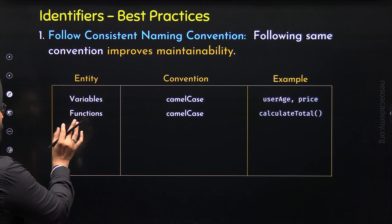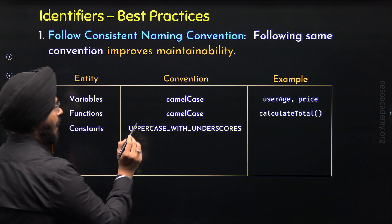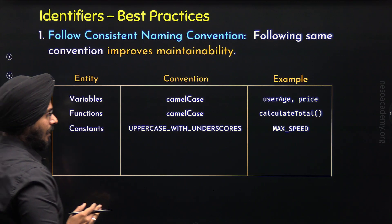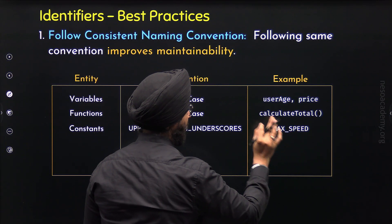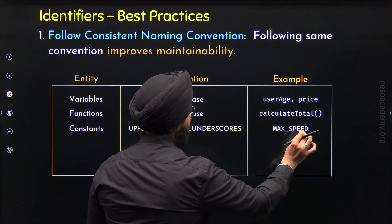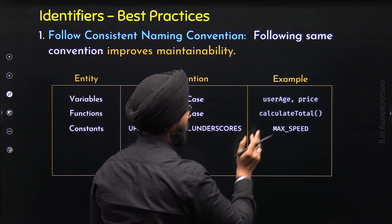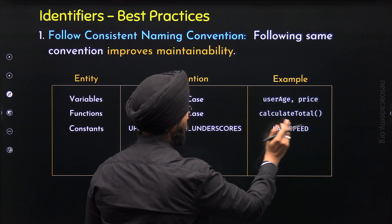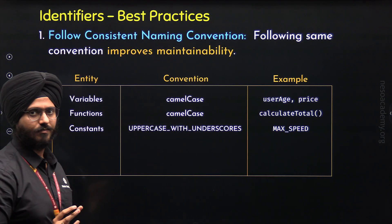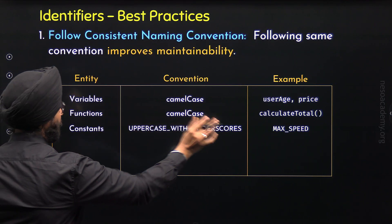Now here comes the third entity: constants. For constants, we can follow the uppercase with underscores convention. Here we have the constant name MAX_SPEED. We have all uppercase letters, and these two words are separated by an underscore. This allows us to differentiate between the two words and gives us separation between them.